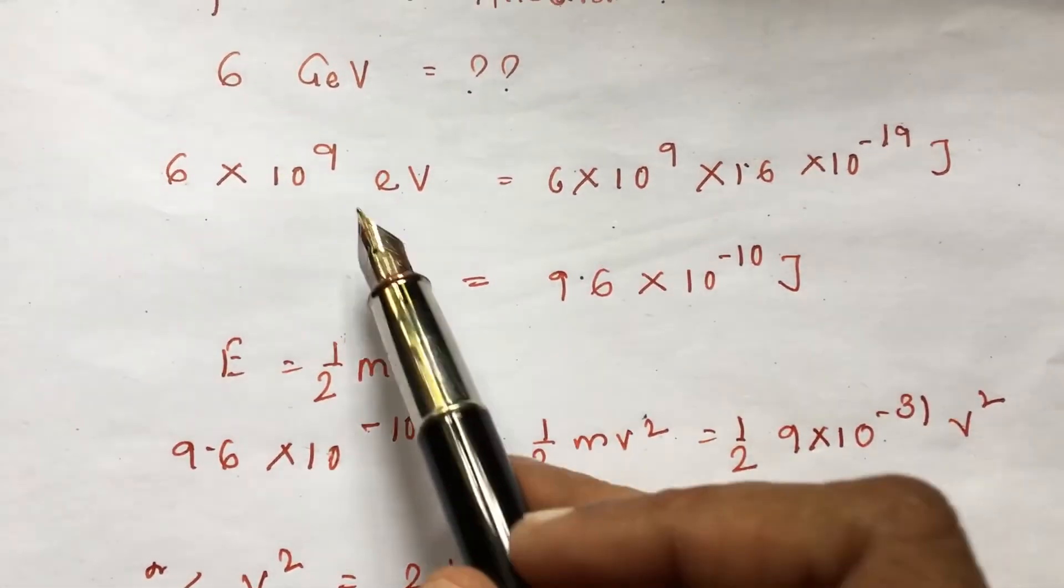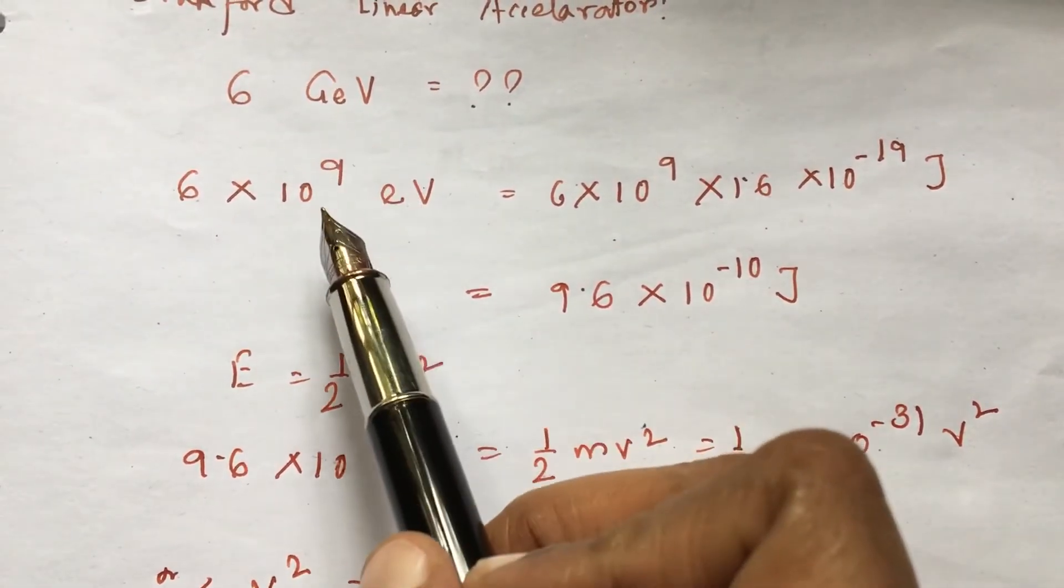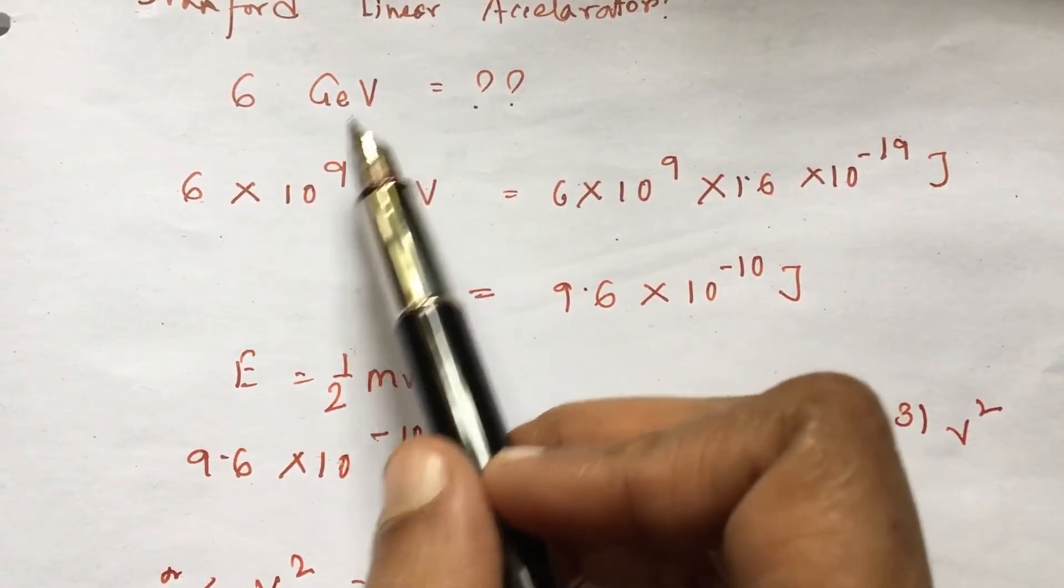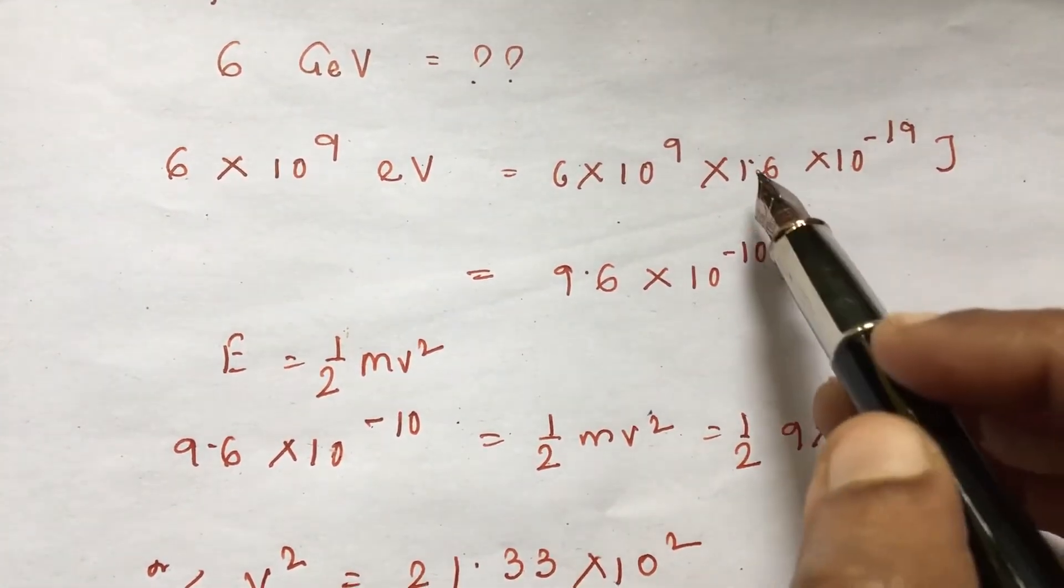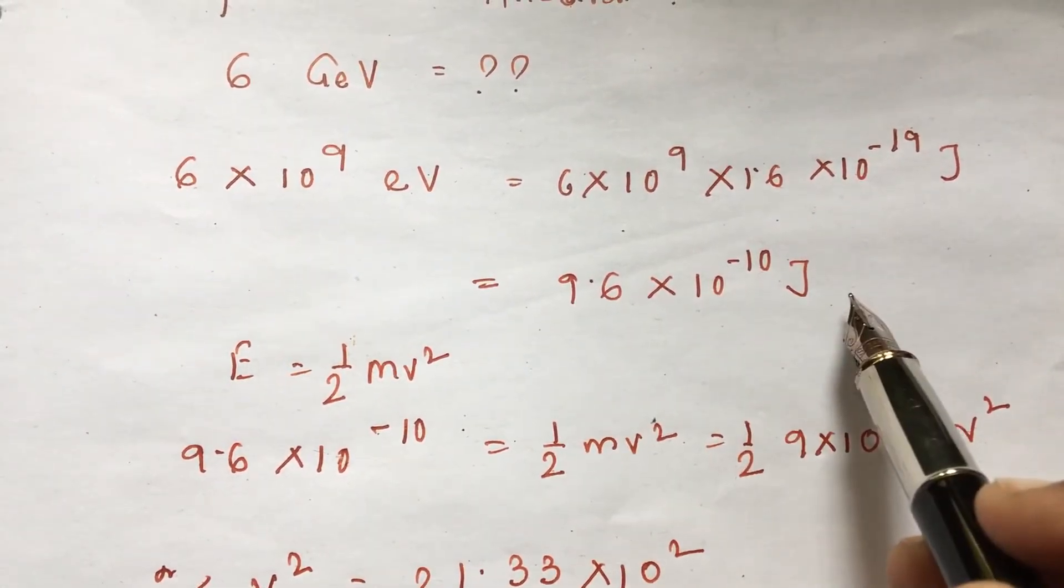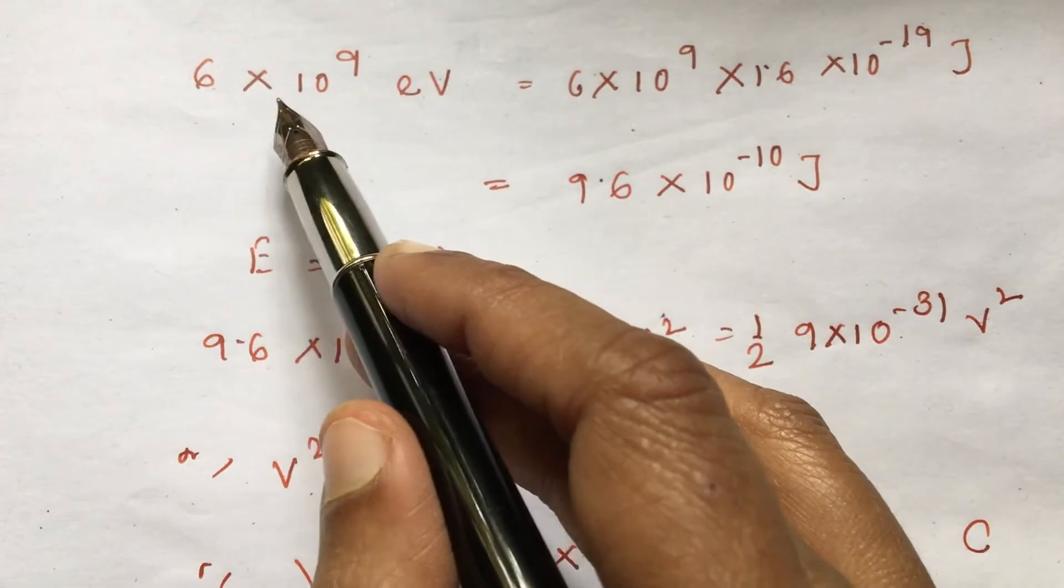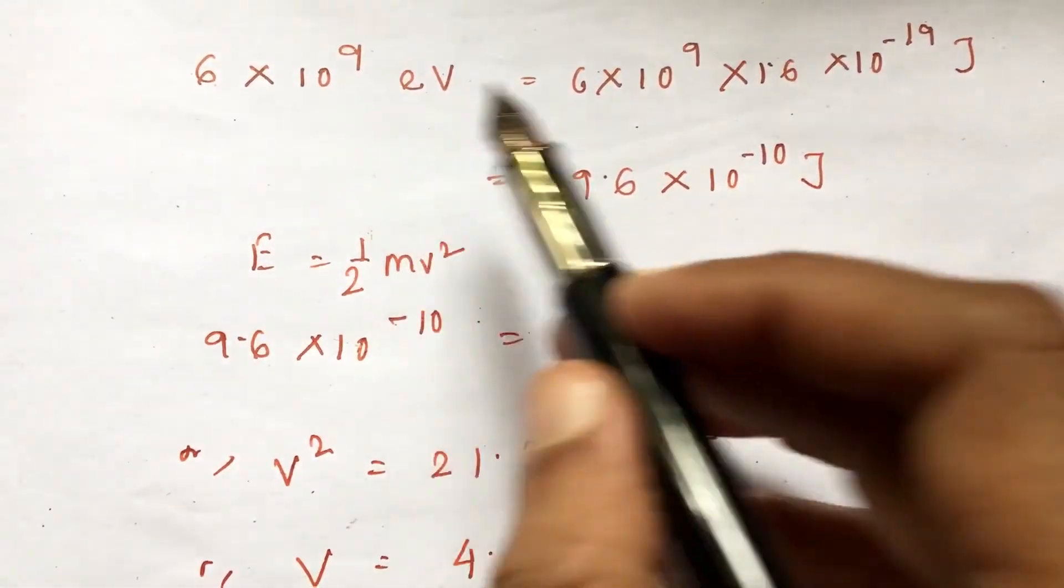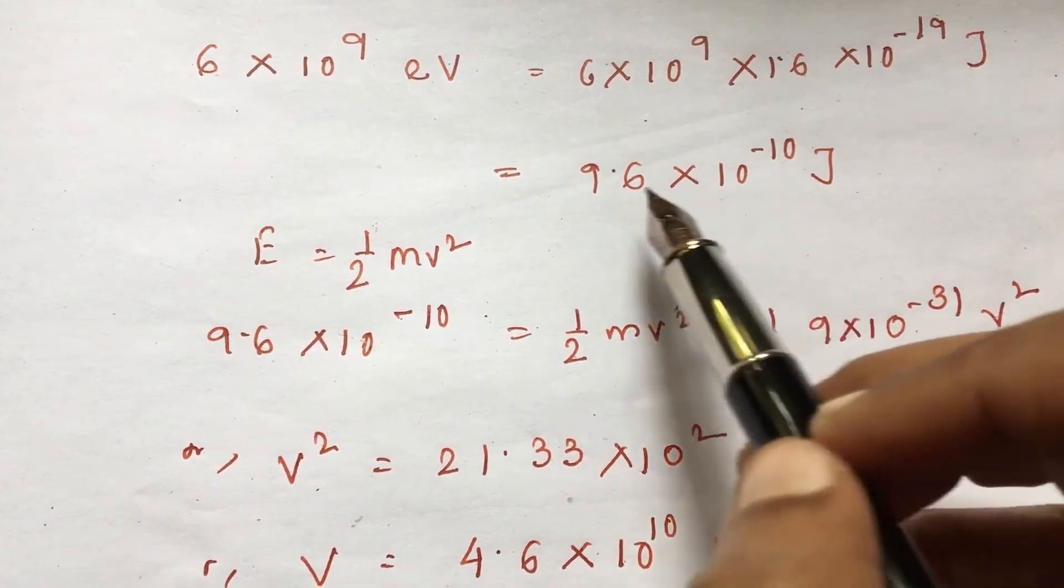So what is the energy involved in 6 Giga electron volt electron beam? Giga electron volt can be transferred to electron volt by multiplying with 10 to the power 9 factor. 1 Giga electron volt is 10 to the power 9 electron volt. We have to transfer it to joule. So we are multiplying with 1.6 into 10 to the power minus 19, it comes to joule. This is the result.